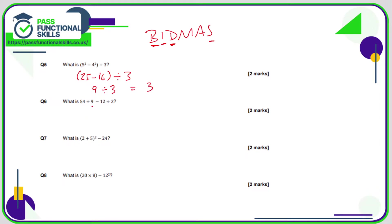Question 6: we have division and subtraction. Division takes place before subtraction, so we do both divisions first — it doesn't matter which order. 54 divided by 9 is 6, and 12 divided by 2 is also 6. The question is now 6 take away 6, so the answer is 0.